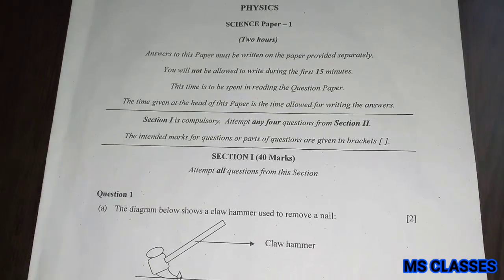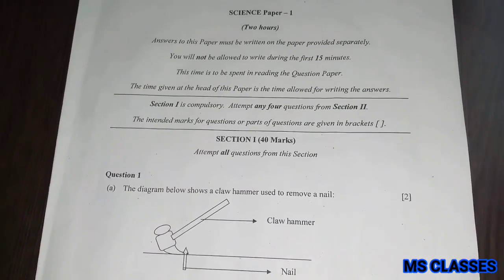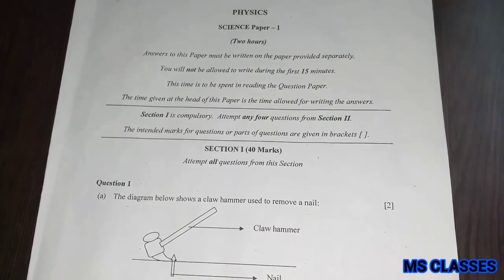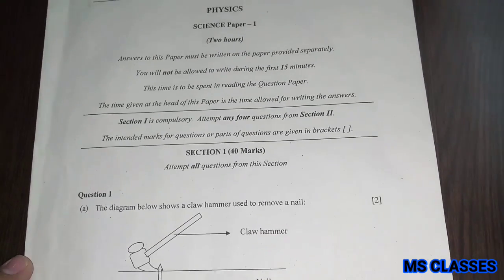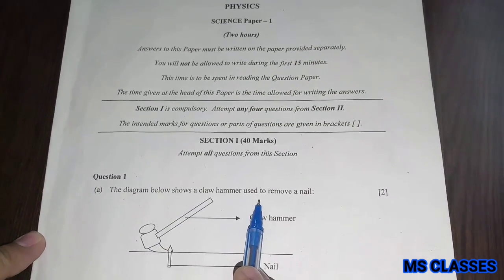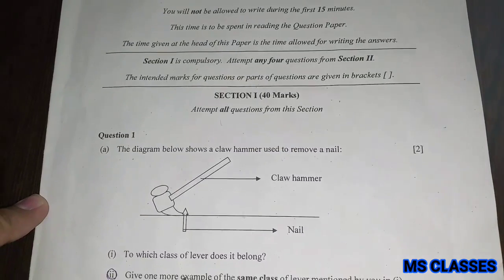Hello students, welcome to MS classes. Today we will discuss the solution of ICSE 2019 physics paper. Let's start with section 1, question 1. The diagram below shows a claw hammer used to remove a nail.